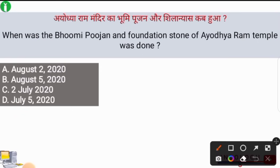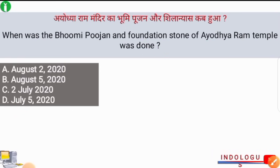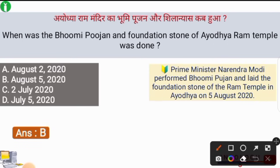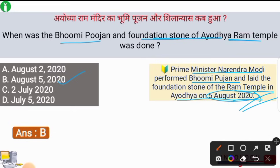When was the Bhoomi Poojan and the foundation stone of Ayodhya Ram Mandir done? The correct answer is option number B, i.e. 5th of August 2020. Our Prime Minister Narendra Modi performed the Bhoomi Poojan and laid the foundation stone of the Ram Temple in Ayodhya on 5th of August 2020.